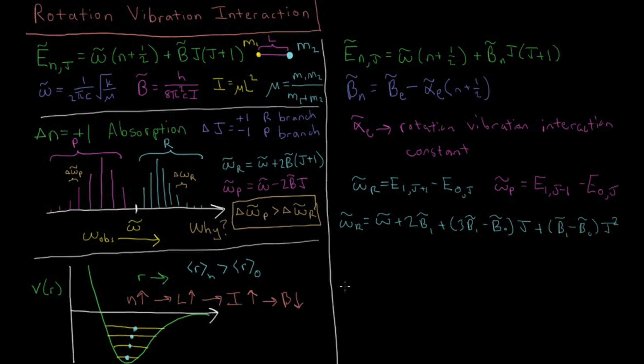And similarly for the P branch we're going to have our ω̅ₚ is going to be this expression here, substituting that in: ω̅ minus B̅₁ plus B̅₀ times j, and then plus the same B̅₁ minus B̅₀ times j squared.